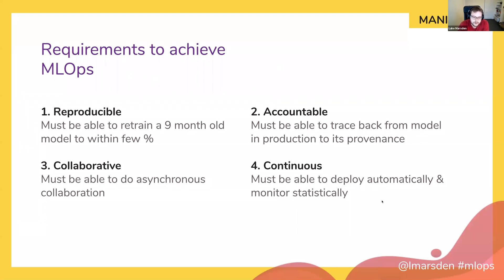Monitoring models is quite different to monitoring regular software deployed as microservices. When you monitor software, you can monitor things like latencies and error rates. But machine learning models can be giving you perfectly normal latencies and perfectly normal error rates even when something is wrong. The reason is that if you already knew the right answer for what the model was predicting, you wouldn't need the model — in other words, the production data is unlabelled. This makes it challenging to understand the behaviour of your model once it's running in production.